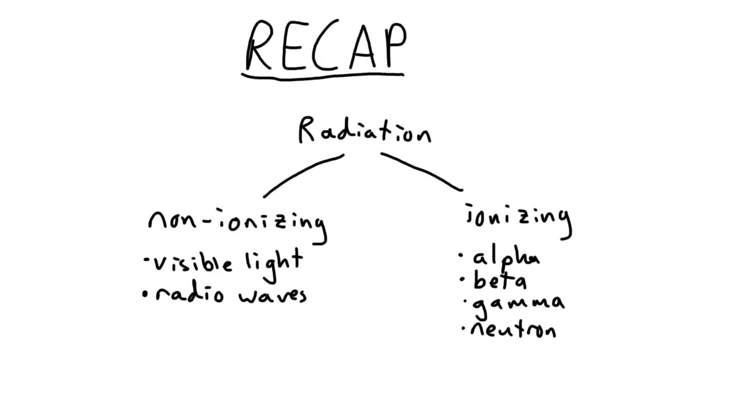So, to recap. Radiation comes in two forms: non-ionizing, like visible light, and ionizing, such as alpha, beta, gamma, and neutron radiation. These four types of radiation have different sizes, damage potential to humans, and penetrating power.